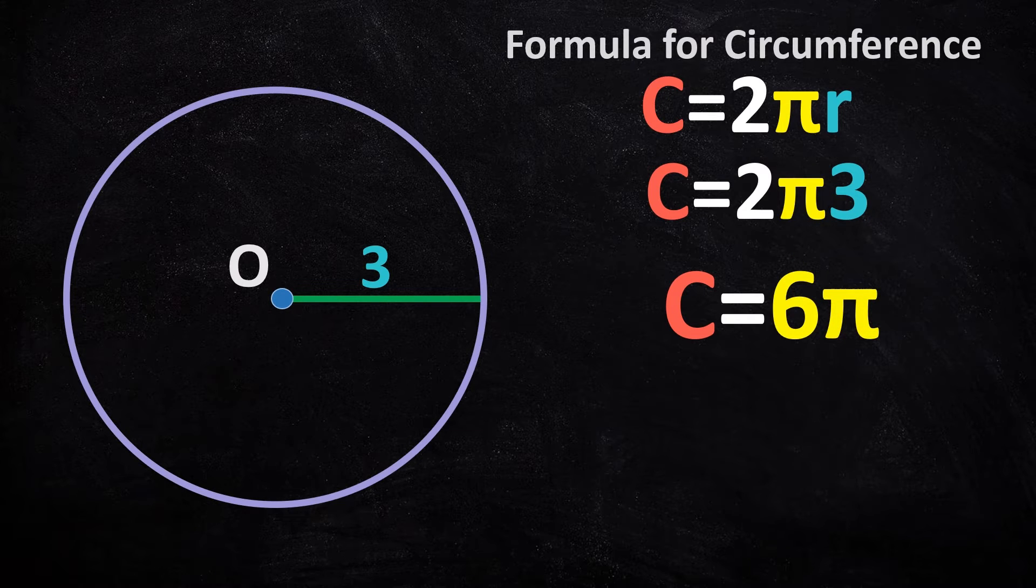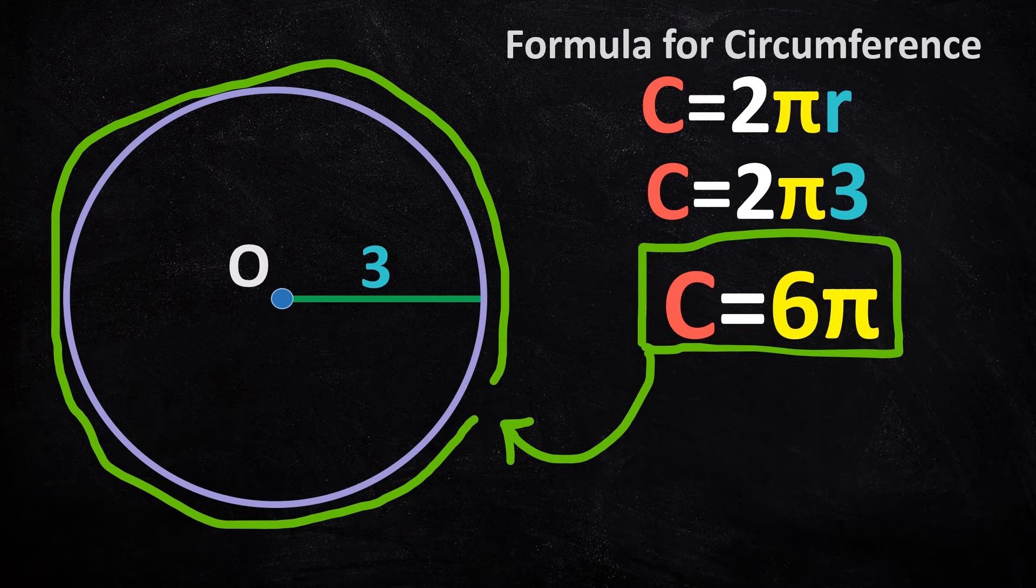You must have realized the pattern here. Simply multiply the radius with 2 and put a pi next to it.